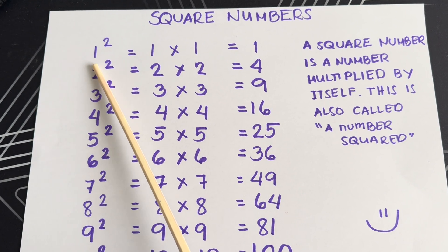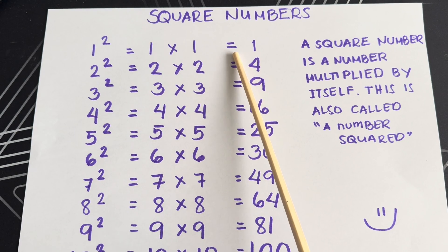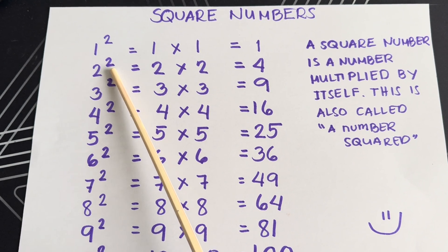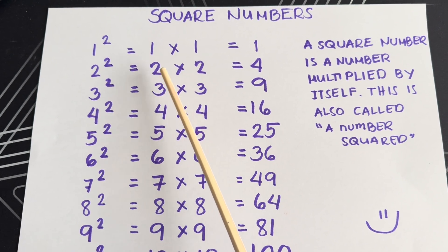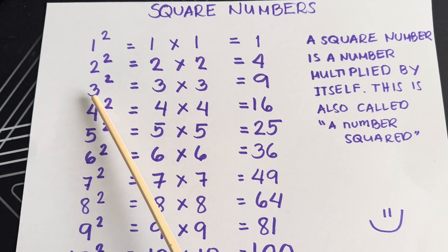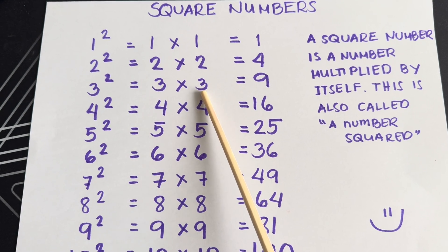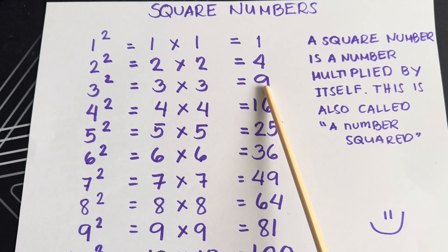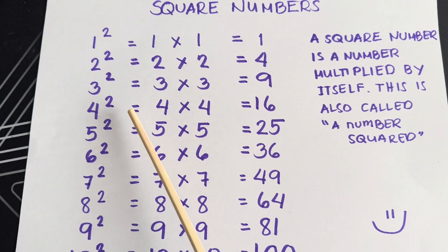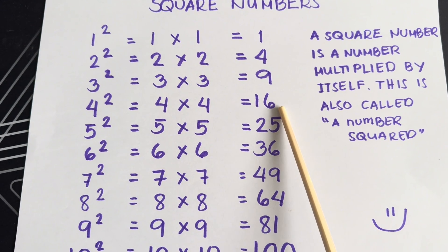1 squared or 1 times 1 is equals to 1. 2 squared or 2 times 2 is equals to 4. 3 squared or 3 times 3 is equals to 9. 4 squared or 4 times 4 is equals to 16.